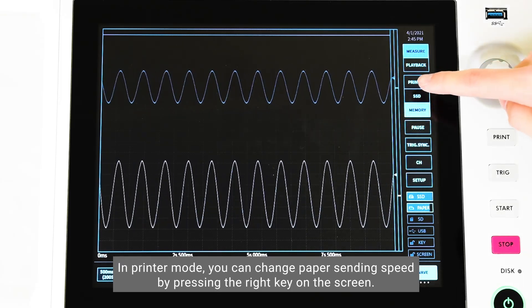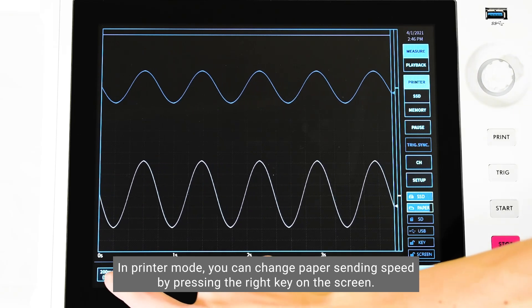In printer mode, you can change paper sending speed by pressing the left key on the screen.